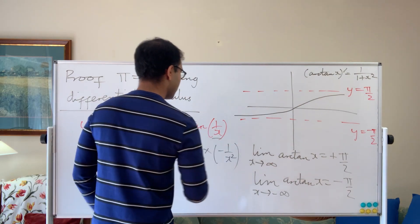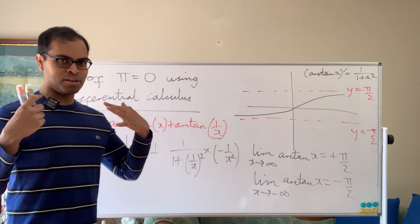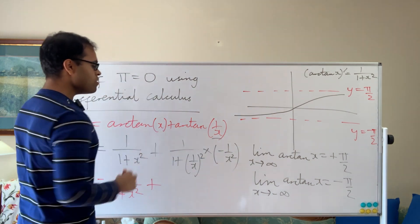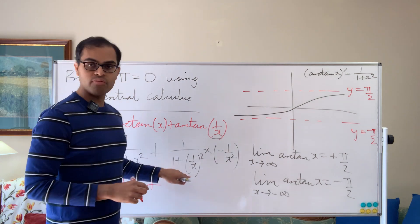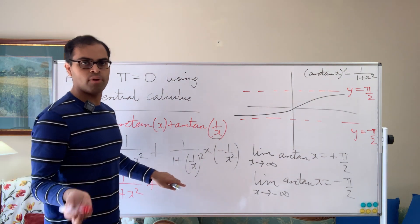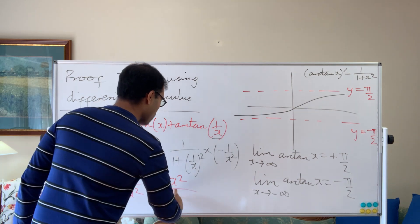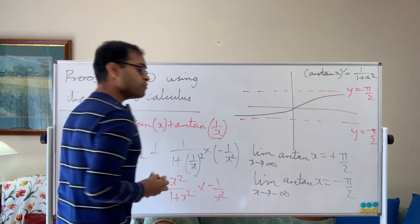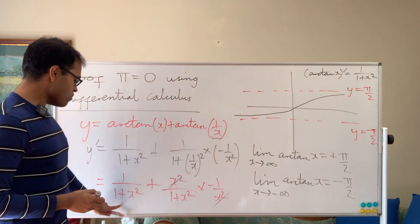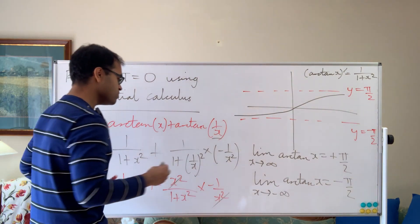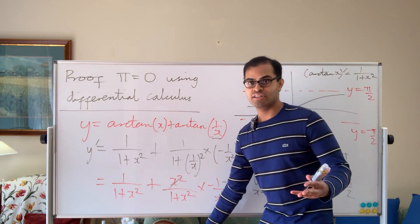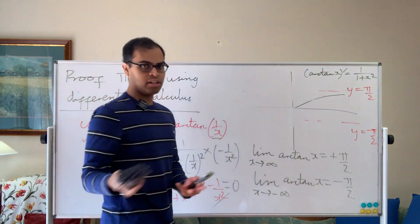So we get 1 over 1 plus x squared, plus — putting a common denominator, x squared plus 1 over x squared becomes x squared over 1 plus x squared — then multiplied by negative 1 over x squared. The x squared terms cancel, leaving negative 1 over 1 plus x squared. So we have 1 over 1 plus x squared minus 1 over 1 plus x squared, which is zero. The derivative is zero, meaning this is a constant function — only functions with derivative zero are constants.